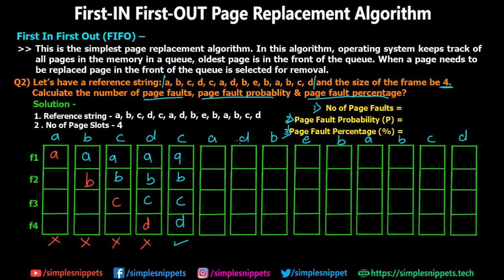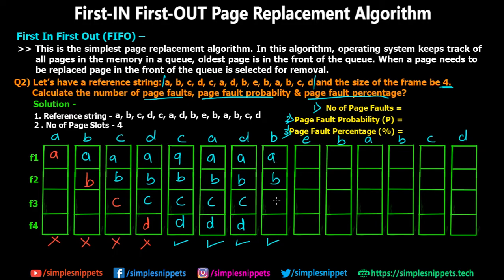For steps six and seven, pages A and D are requested. Both are already in memory, so no page faults occur and the frames remain A, B, C, D. Similarly, for step eight, page B is requested and B is already in memory, so again no page fault — frames stay as A, B, C, D.